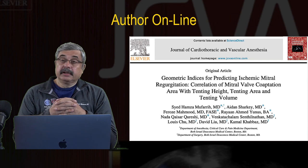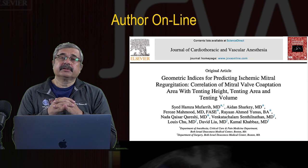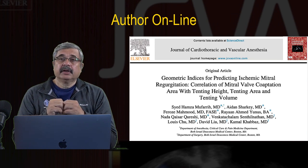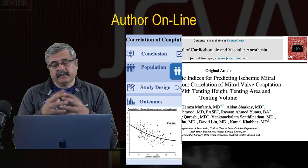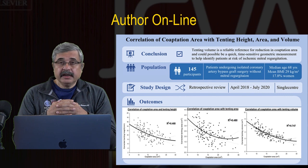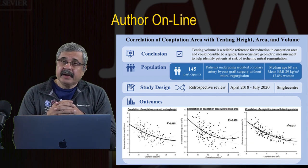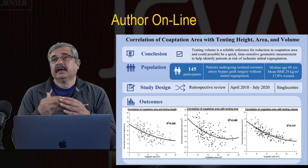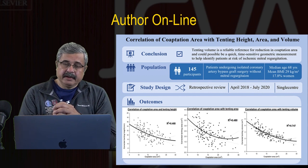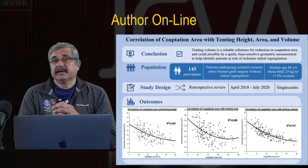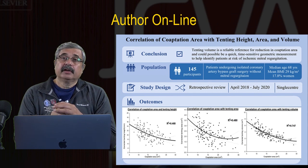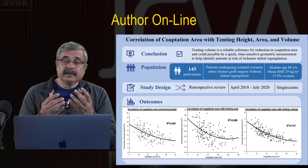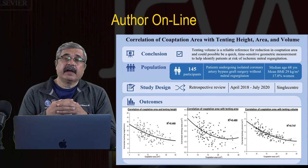That was Dr. Aidan Sharkey, lead author of this important publication demonstrating the negative correlation between coaptation area — the degree of leaflet apposition — and indices of mitral valve remodeling: tenting area, tenting height, and particularly tenting volume. Tenting volume represents the entire topography and surface of the valve and is a better indicator of global remodeling compared to tomographic sectional measures. This important index can potentially be used to track patients with lower mitral valve reserve and enable earlier medical, surgical, or percutaneous intervention to prevent mitral regurgitation and irreversible valvular remodeling.